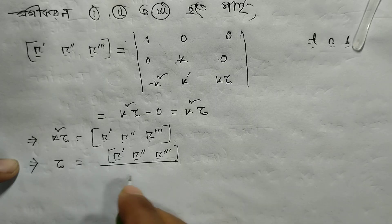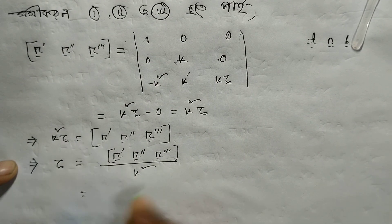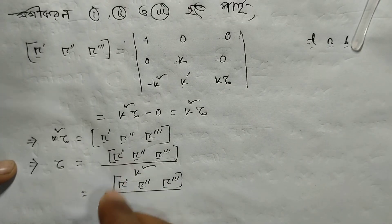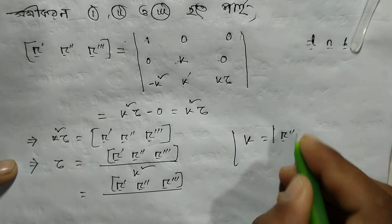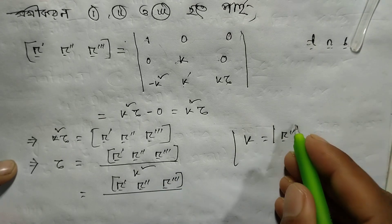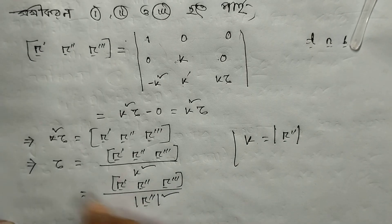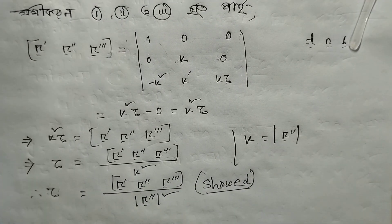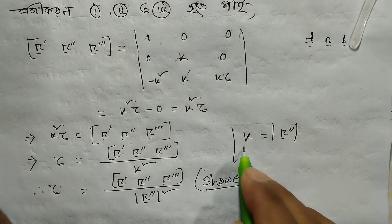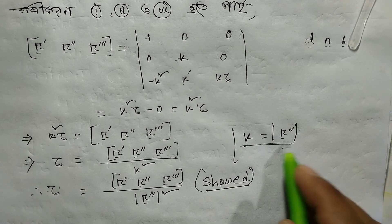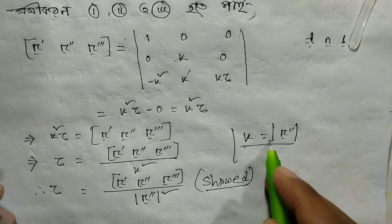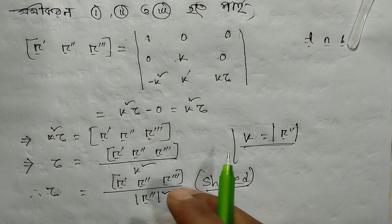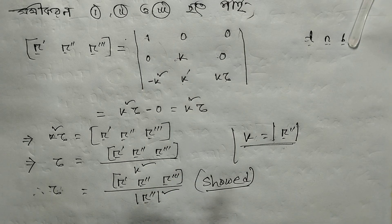So tau — the torsion — multiplied by kappa squared, divided by the modulus of r double prime vector. And the value of kappa — the modulus of r double prime vector — is kappa. So tau equals modulus of r double prime vector. The value of tau in terms of the n vector components and kappa is derived here.